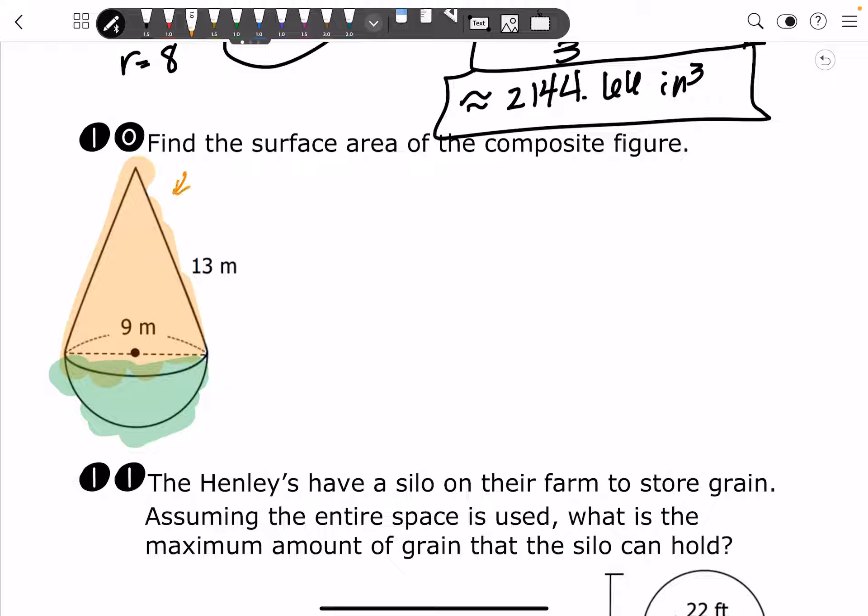And you'll notice for the cone, all we're really going to need is we're going to need the lateral surface area of our cone. I want to remind you that the formula for that is pi rl, with r being the radius and l being your slant height. So we're going to go ahead and get pi times 4.5, since that 9 is our diameter, and times a slant height of 13.